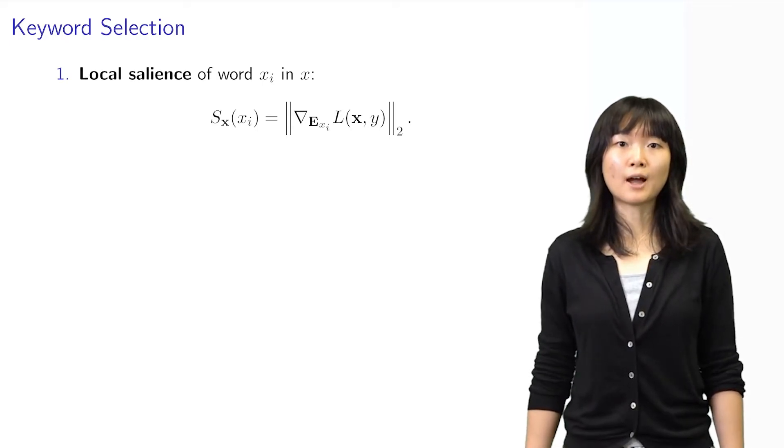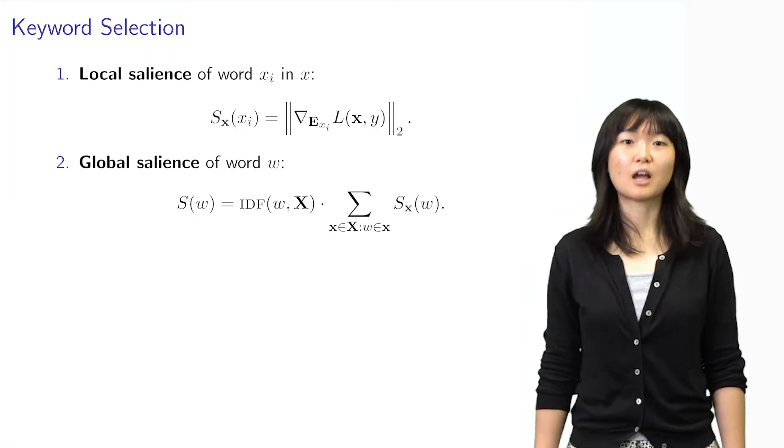We can approximate the importance of a token in the document as the norm of the loss gradient with respect to the word's embedding. We are interested in the global importance of word type W across many documents.